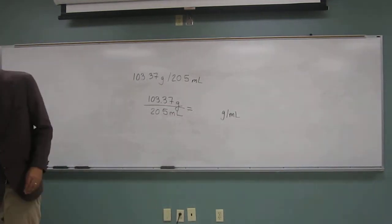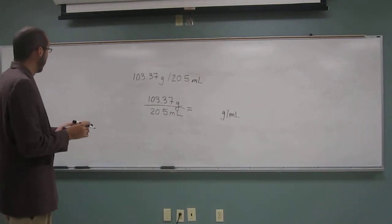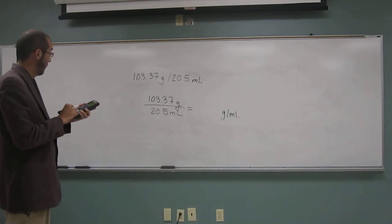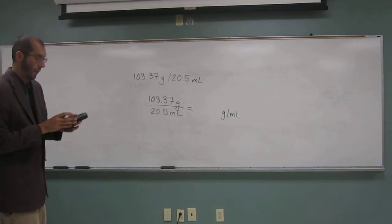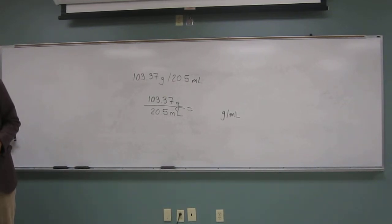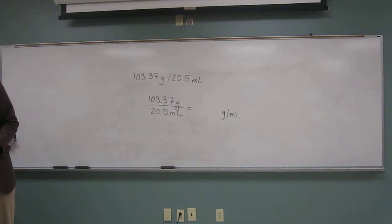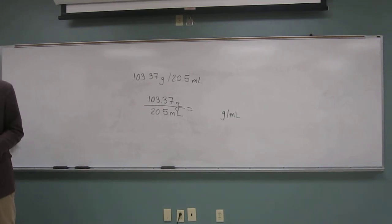So let's get our calculators out and say 103.37 divided by 20.5. And I see my answer says 5.042439024. Am I going to put all those numbers on there? No way.